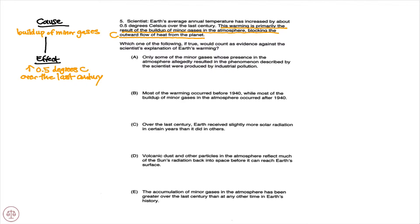Now that we have a clear understanding of this passage, let's proceed to the question stem. Which of the following, if true, would count as evidence against the scientist's explanation of the Earth's warming? Notice: evidence against. This is a weakening question, asking us to weaken this scientist's explanation of the Earth's warming.